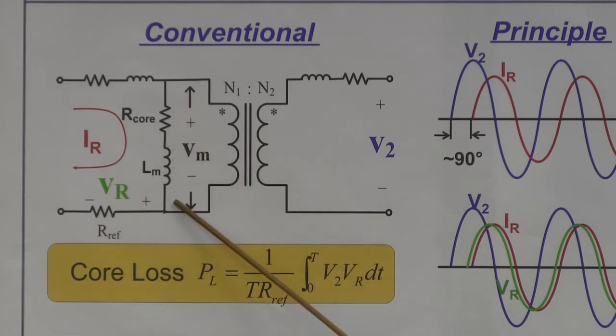Now we know the voltage and the current through this R-L branch, and by integrating the product of Vr and V2, we can get the core loss. This method is good because it automatically excludes winding loss.